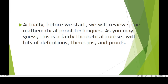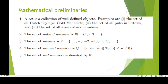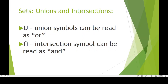Before we start, we will review some mathematical proof techniques. As you may guess, this is a fairly theoretical course with lots of definitions and proofs. We're going to discuss the mathematical preliminaries. A set is a collection of well-defined objects. Examples are the set of all Dutch Olympic gold medalists, the set of all clubs in the tower, and the set of all even natural numbers. The set of natural numbers is {1, 2, 3, ...}. The set of integers Z contains negative numbers and so on. The set of real numbers is denoted by R.